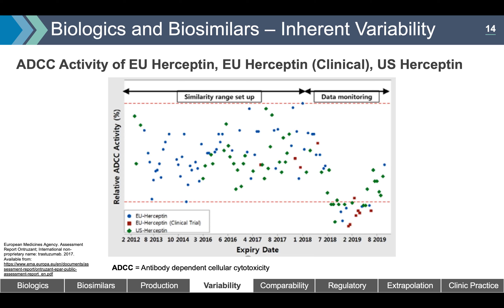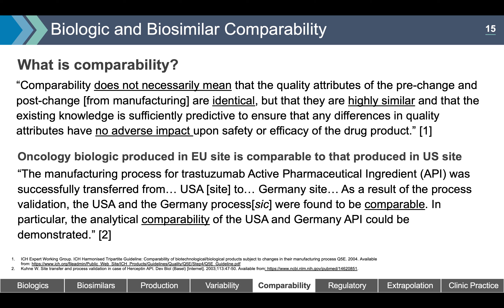A scatter plot demonstrates that ADCC activity is much more variable in the EU and US batches of rituximab. The relative ADCC activity ranges from 65 to 140%, demonstrating that this key attribute has significant natural variability. As per the Health Canada Summary Basis of Decision document, the biosimilar must show that its range of variability is highly similar to the innovator biologic.